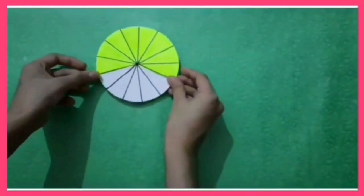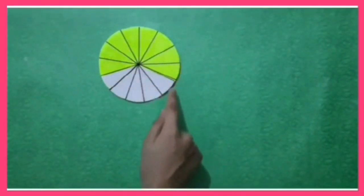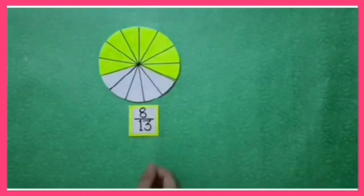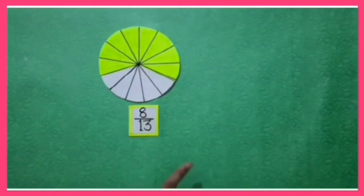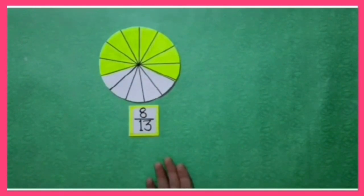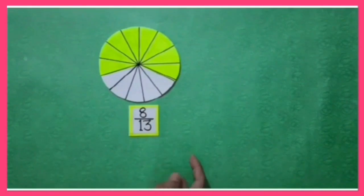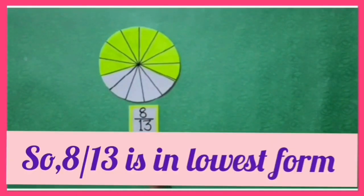Now I have a circle which is divided into 13 equal parts. Tell me, what is the fraction of the colored part? Yes — 8 upon 13. We cannot find a further lowest form of 8 upon 13. In mathematical terms, in 8 upon 13, both numerator and denominator are not divisible by any number other than 1. So, 8 upon 13 is in its lowest form.